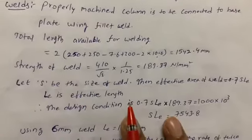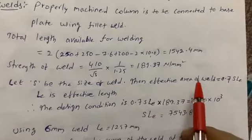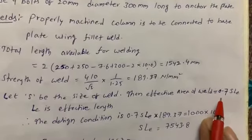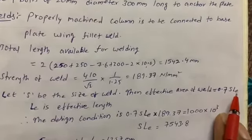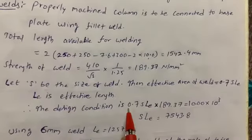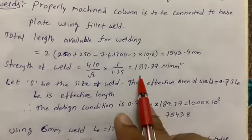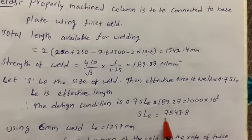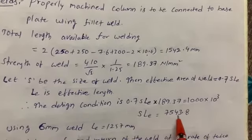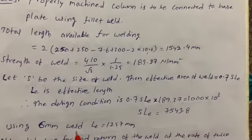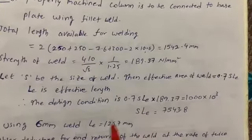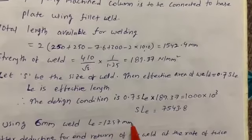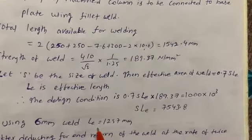Let s be the size of the weld. The effective throat area of the weld is 0.7 × s × l_e, where l_e is the effective length. Equating: 0.7 × s × l_e × 189.37 = 1000 × 10³, giving s × l_e = 7543.8. Using s = 6 mm weld, the effective length l_e = 1257 mm.